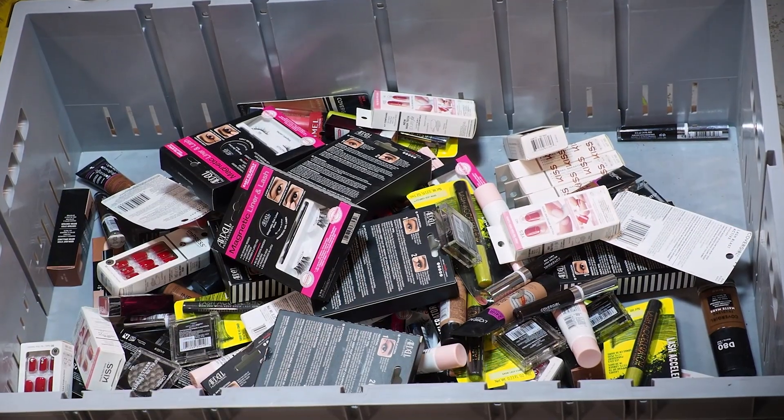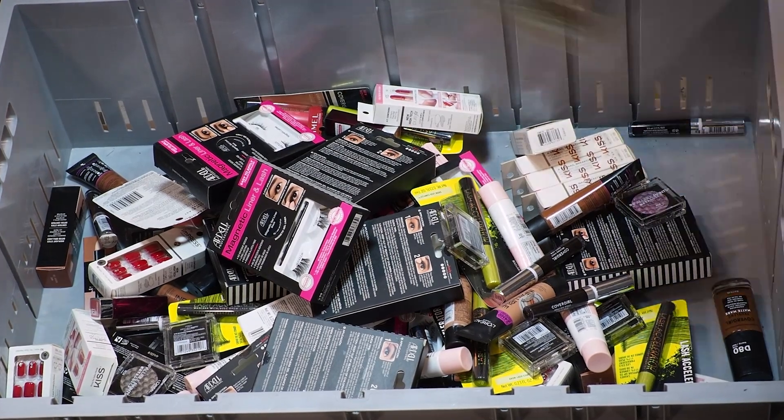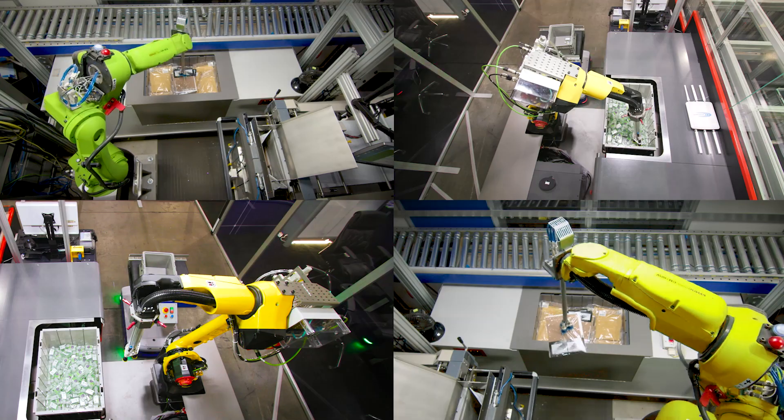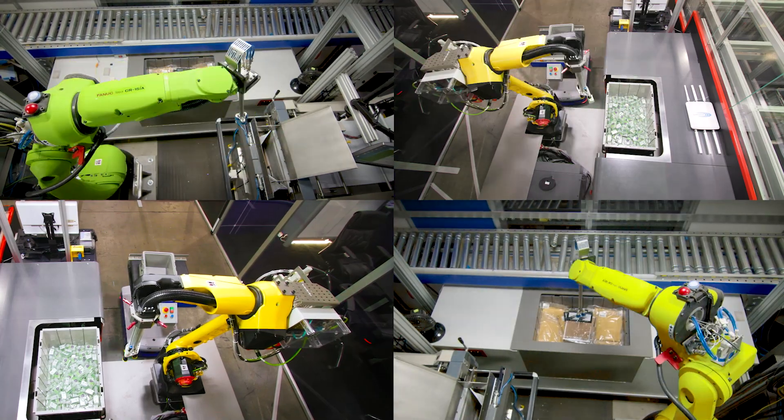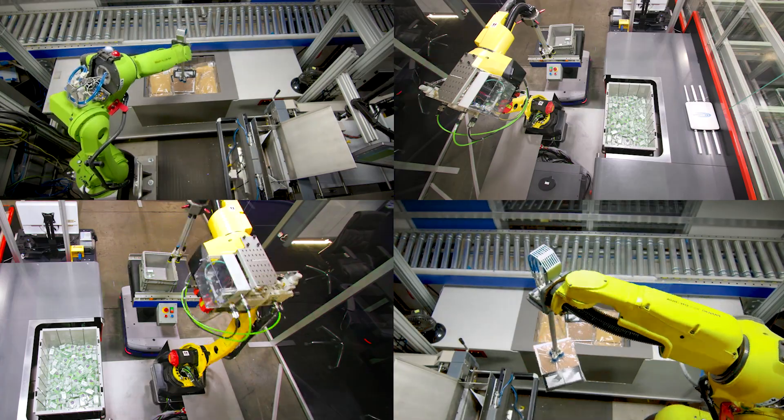As new products are introduced, the AI software adds optimal picking information to its extensive library of previous picks and shares it across the entire network of robots. This allows them to continuously learn from each other and function as a single, highly efficient order fulfillment system.